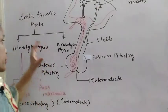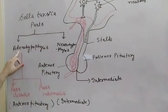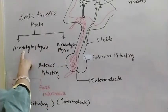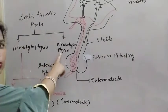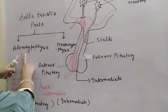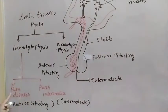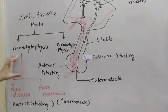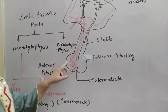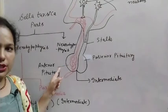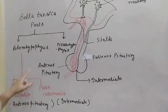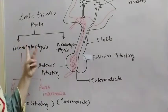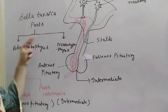The pituitary has two parts: adenohypophysis and neurohypophysis. Adenohypophysis has two parts: pars distalis and pars intermedia. Pars distalis is also known as the anterior pituitary.